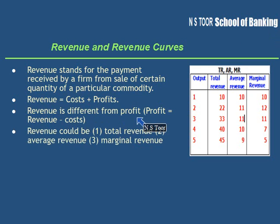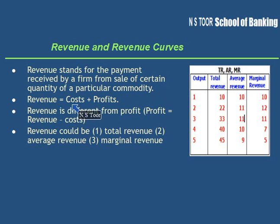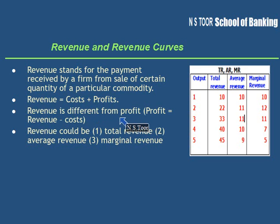Revenue should not be taken as the same thing as profit. Revenue is different from profit. By revenue, we mean the amount of sale. And by profit, we mean revenue minus cost is equal to profit. So revenue is equal to cost plus profit, and profit is equal to revenue minus cost. Hence revenue is different from profit. Revenue means total sale.